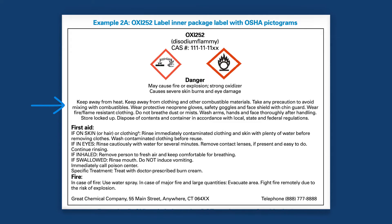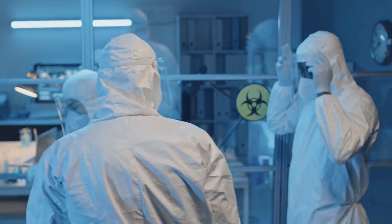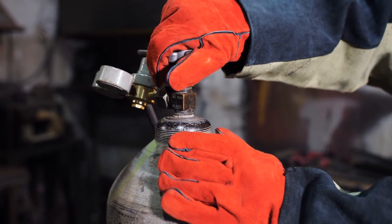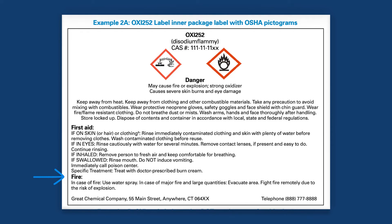Next, we find a series of detailed precautionary statements, such as keep away from heat, clothing, and other combustible materials. Wear specific protective gear like neoprene gloves, safety goggles, a face shield with a chin guard, and flame-resistant clothing. We're warned not to breathe in dust or mist and reminded to wash thoroughly after handling. It also covers methods for safe storage and disposal. We then see an extensive list of first aid measures for various types of exposure — from skin and eye contact to inhalation and ingestion — including specific treatment measures such as the use of a doctor-prescribed burn cream. The label also provides specific instructions for handling a fire involving this chemical, including using water spray to put it out and warning of the risk of explosion. Finally, supplier information gives us the details needed to contact the manufacturer or distributor for more information.